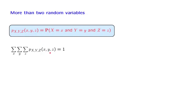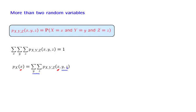Once we have the joint PMF, we can recover the marginal PMFs. For example, to find the probability that random variable X takes on a specific value little x, we consider all possible triples where X indeed takes that value, and we sum over all possible Y's and Z's that could accompany this particular X. Similarly, to find the probability that X and Y take on two specific values, we consider all possible Z's that could go with that (x, y) pair — we range over all outcomes where X and Y are fixed but Z is free to take any value, and sum the corresponding probabilities.